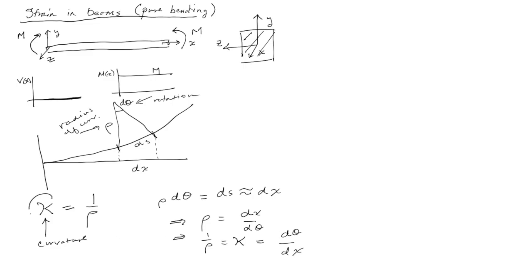We have a sign convention for curvature. If a beam bends up into a smiley face shape, that's positive curvature. A frowny face is negative curvature. That's half the derivation.